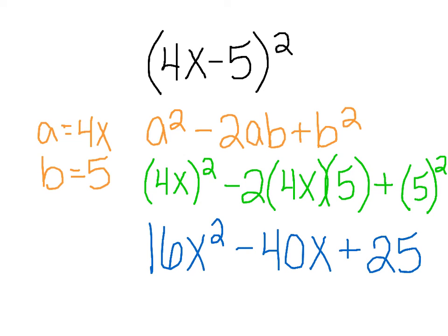Now remember, if this doesn't totally resonate with you, if you don't understand this completely, you can always use one of your other methods of multiplying binomials, but this is a shortcut. It's a special product, and it's important to understand that there are specific patterns that can be applied to terms like 4x minus 5 squared, where it's the same term being multiplied two times.